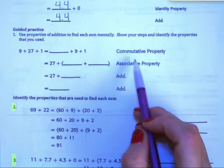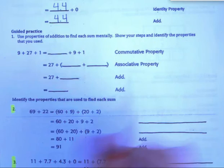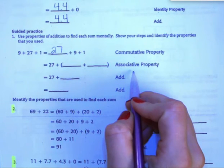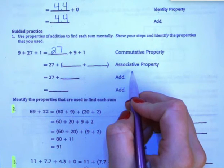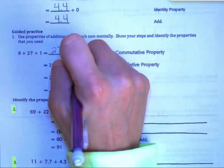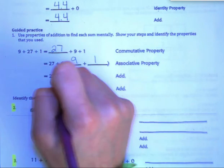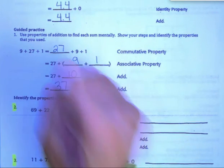Using the commutative property, we can rearrange here to 27 plus 9 plus 1. Then we are going to use grouping based on our associative property to group 9 and 1 together. Because we can easily add those. So 27 plus 10. Add mentally and we get 37 as our answer.